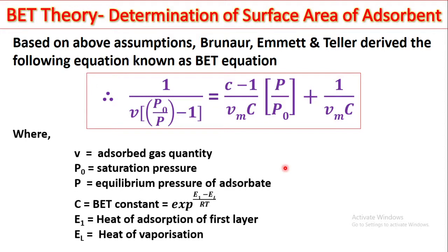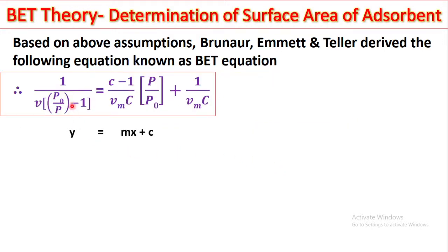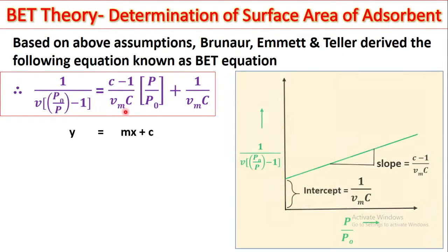Now, this equation is similar to Y equal to Mx plus C. If we plot here Y is equal to this constant on left hand side, M is equal to C minus 1 upon Vm C. This is the slope and X is equal to P upon P0. When we plot Y versus X then we get, on Y axis we have taken this quantity 1 upon V into P0 upon P minus 1 and P upon P0 on X axis then we get a straight line.